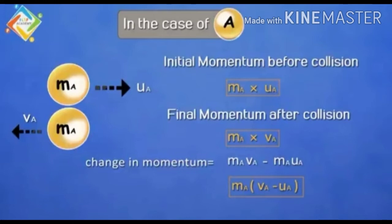For ball A, we have mass MA, initial velocity UA, and final velocity VA. So the initial momentum of ball A is MA × UA, and the final momentum after collision is MA × VA. The change in momentum is final momentum minus initial momentum, which gives MA × VA minus MA × UA. Taking MA as common, we get MA(VA − UA).